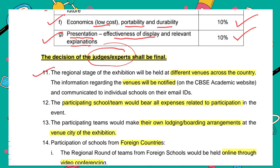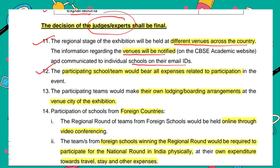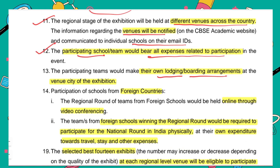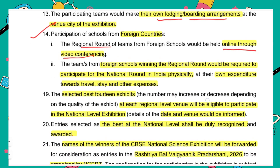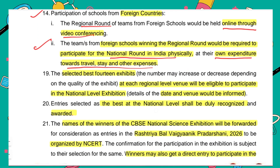The regional stage of the exhibition will be held at different venues across the country. Multiple venues will be decided, and CBSE will inform schools about the venue and date afterward through their individual school email IDs only. Participating schools need to bear all expenses related to participation, including lodging and boarding arrangements. For foreign schools, the regional round will be conducted online through video conferencing. But for the national level, they need to come physically to India, on their own expenditure toward travel, stay and other expenses.